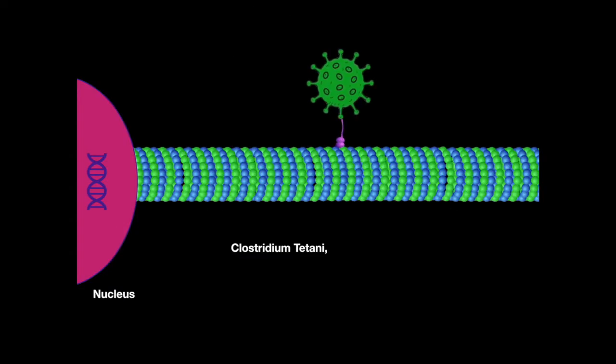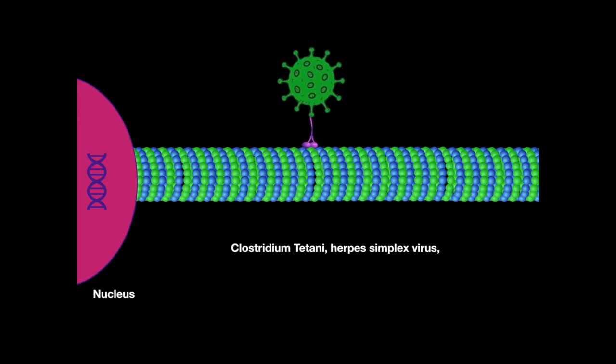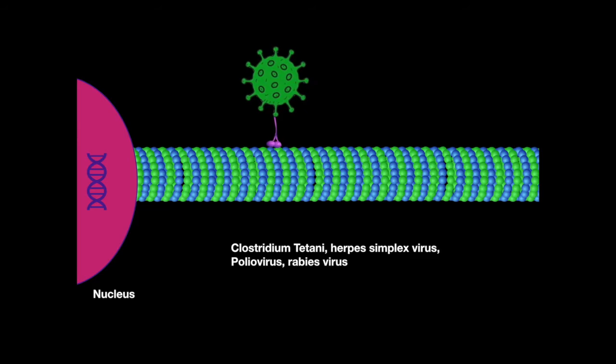Clostridium tetani, herpes simplex virus, poliovirus, and rabies all utilize dynein for retrograde transport into the neuronal body in order to infect the host cell.